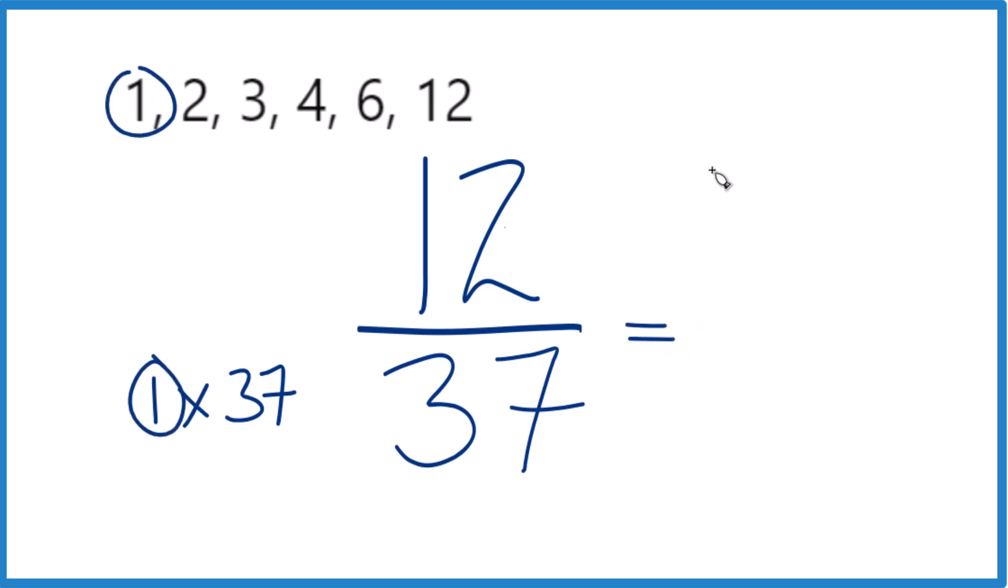So if we divide 12 by 1, we get 12. And if you divide 37 by 1, you get 37. That's what we had before.